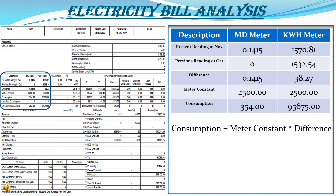How is consumption of maximum demand and KWH calculated? The difference is multiplied by the meter constant to get the consumption total. Multiplying 2500 by the maximum demand difference of 0.1415, we get a consumption of 354 KVA as mentioned in the electricity bill. And multiplying the 2500 meter constant by the KWH difference of 38.27, we get the KWH in units — 95,675 units — which is the net consumption to be charged in the electricity bill.